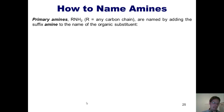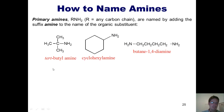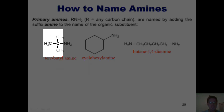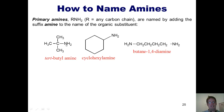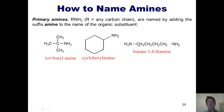We name primary amines by adding the suffix -amine to the name of the organic substituent. For example, a nitrogen attached to a tert-butyl group is called tert-butylamine, and a nitrogen attached to a cyclohexyl group is called cyclohexylamine. When an amine has two NH2 groups, it's called a diamine — for example, using butane as the parent chain with nitrogens on carbons 1 and 4, the molecule is called butane-1,4-diamine.